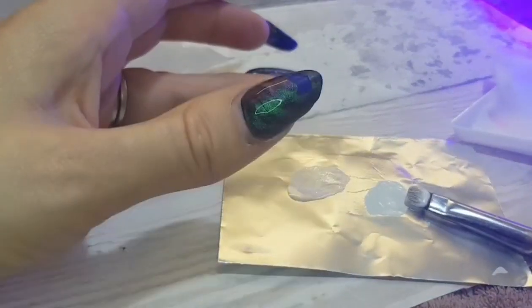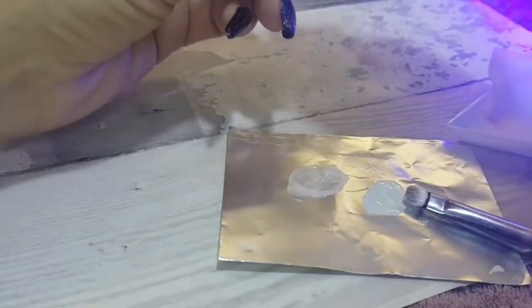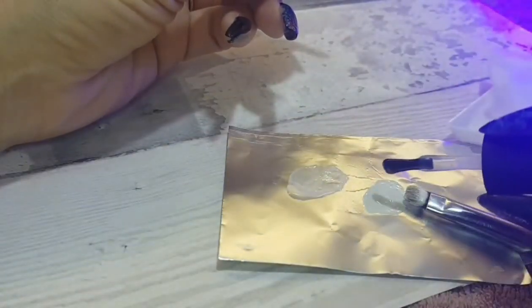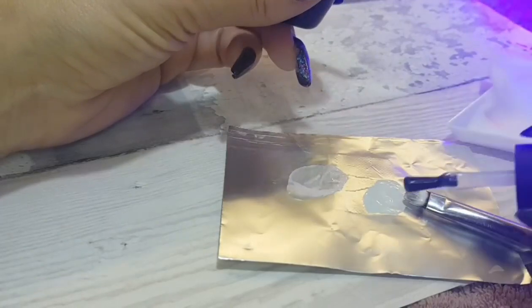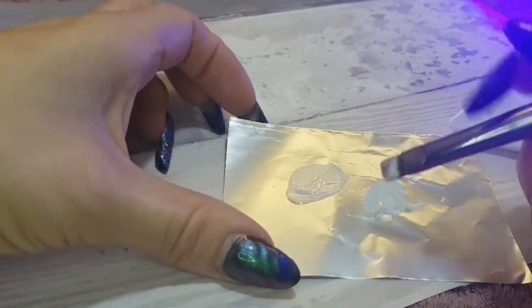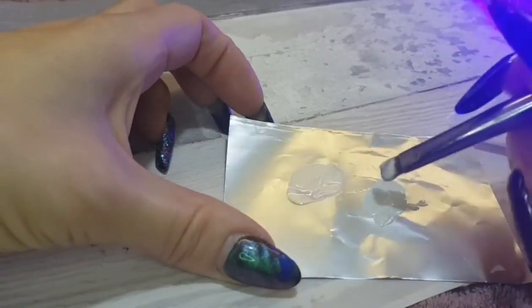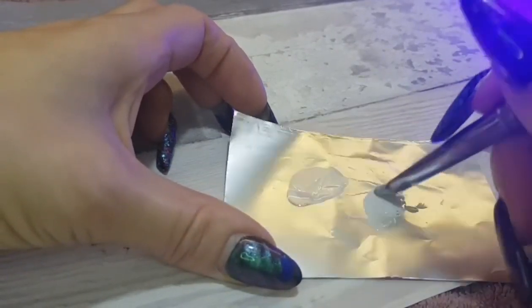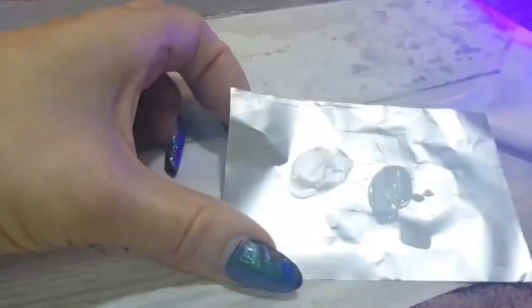As you can see, that was too much white and not enough base, and it didn't make it sheer enough. So you can just add in more base coat like so, until you're happy with the color you've got.